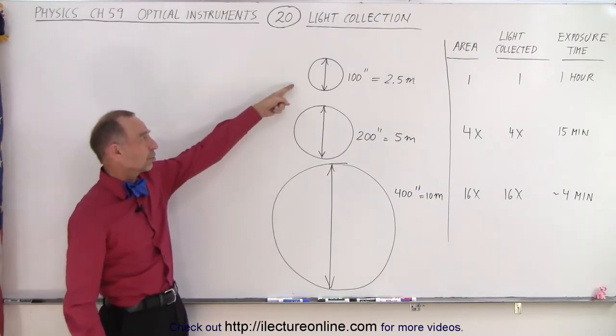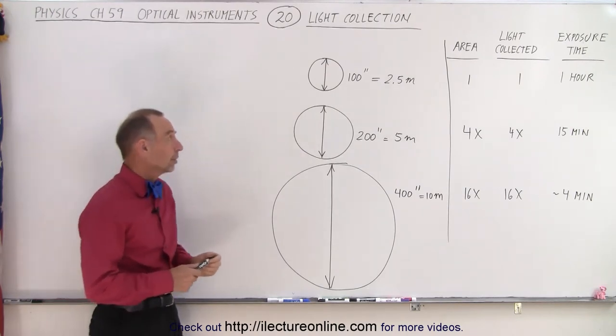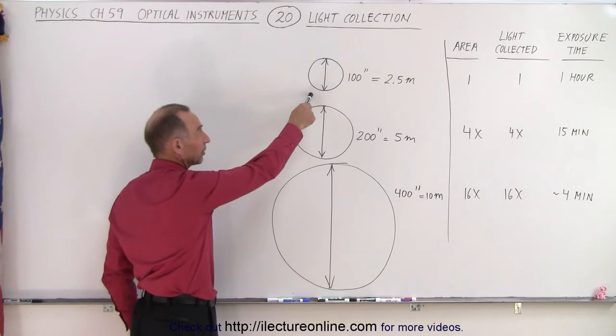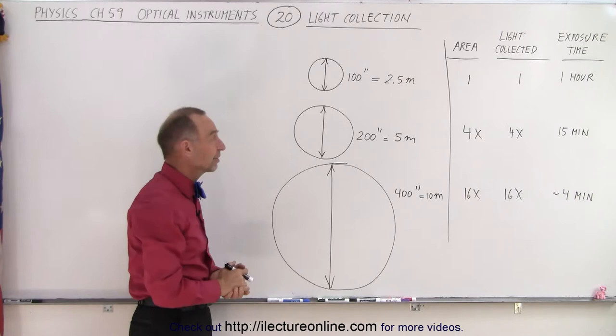We have a 100 inch telescope, a 200 inch telescope, and a 400 inch telescope. For example, the telescope on Mount Wilson here in the California mountains is about 100 inches across, which is about a two and a half meter telescope.